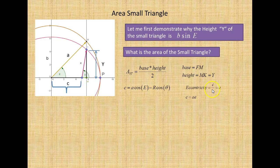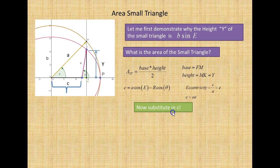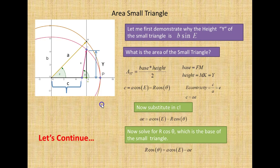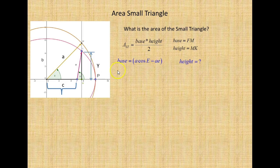C divided by A equals the eccentricity, so C equals A times the eccentricity. Now we substitute in C. We take the equation C equals A cosine E minus R cosine theta, and we get AE equals A cosine E minus R cosine theta. Solving for R cosine theta: R cosine theta equals A cosine E minus A times E. So R cosine theta is the base of the small triangle. Now the base equals A cosine E minus AE. What is the height?